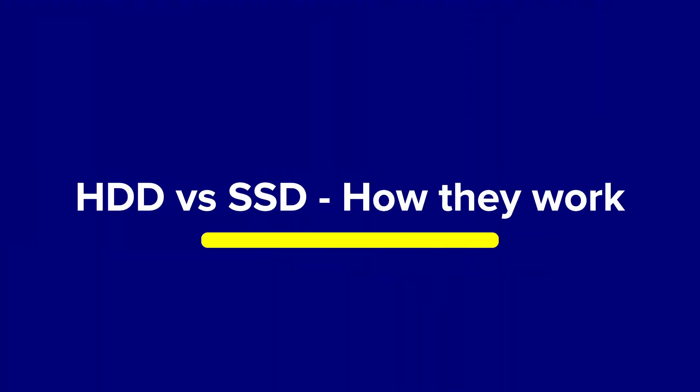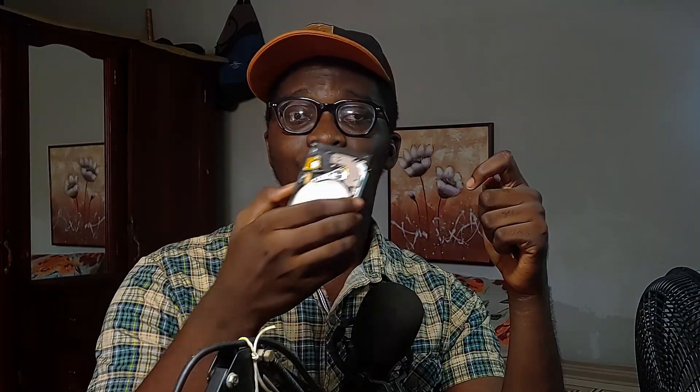So first of all, this is an HDD and this is an SSD. There are bigger types of HDDs like this one here. The HDD stands for hard disk drive, or you can just call it a hard disk. The SSD is known as a solid state drive. SSDs come in different forms — some come in the shape of the HDD, and some come in about half the size.